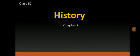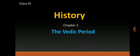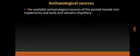Hello students of class 9, today we are going to study chapter 2, the Vedic period. Today we are going to see archaeological sources. The available archaeological sources of the period include iron implements and tools and remains of pottery.